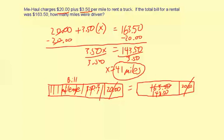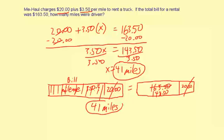Then we divide: you want to know how many times you can divide $143.50 into parts of $3.50. With our division it was 41 — you can make 41 little divisions of $3.50, and each division represents a mile. So that's a more visual way to solve the problem without working directly with the equation.